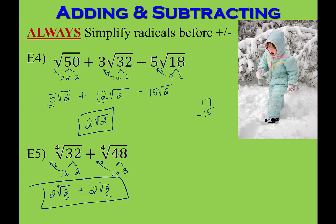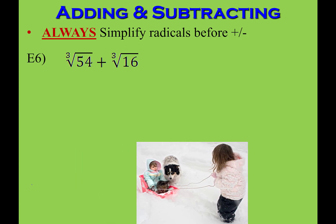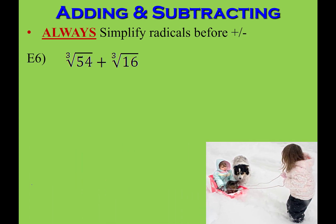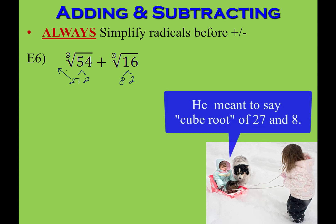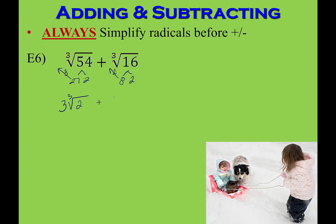If the problem says simplify, you do anything you're legally allowed to do: simplify radicals, add, subtract, multiply, divide, rationalize — but only what's permitted. For the cubed root of 54 plus the cubed root of 16, I break them into 27 times 2 and 8 times 2. The cube root of 27 is 3, giving 3 cubed roots of 2, and the cube root of 8 is 2, giving 2 cubed roots of 2. Since both are cubed roots of 2, I can add: 3 plus 2 is 5 cubed roots of 2.